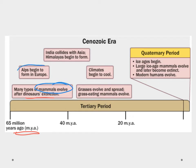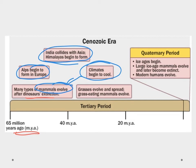The Alps started to form in Europe, we saw that India collided with Asia, and the Himalayan mountains started to form. Climates began to cool a little bit, and that was key to our mammal evolution. About 40 million years ago or so, we saw that grasses evolved and started to spread, and this allowed our grass-eating mammals to evolve and then flourish.